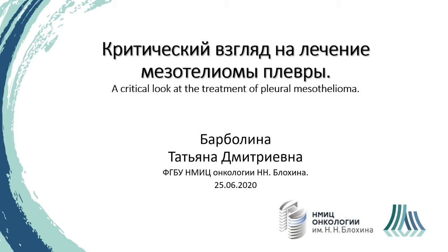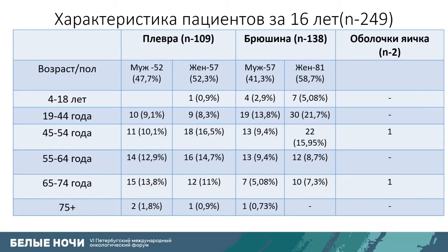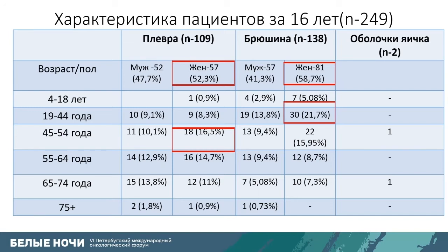Good afternoon. Today we'll consider the treatment of MPM with drugs and will be critical. I asked how many patients we had in our center in the last 16 months. On the diagram, the number of cases keeps growing. In 16 years, we managed to analyze 249 cases of mesothelioma — mainly pleural mesothelioma: 109 pleural, 138 abdominal, and three involving the membrane of the testicles.